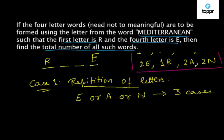The letters formed using E or A or N, we get R E E E, or R A A E, or R N N E. These are the three cases in which repetition is possible.